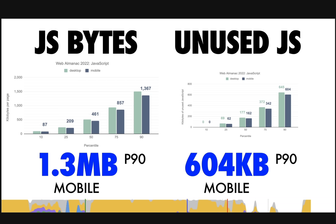Here's some data from the HTTP Archive showing JavaScript bytes on mobile, as well as unused JavaScript bytes on mobile. This year marked yet another increase in the amount of JavaScript people were shipping to browsers — an 8% increase from 2021 for mobile devices. According to Lighthouse, the median mobile page loads about 162 kilobytes of unused JavaScript, with the 90th percentile at about 604 kilobytes. This is a slight uptick from last year — we're still shipping a lot of JavaScript down to our users, probably too much.